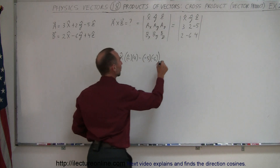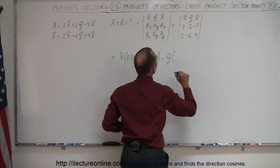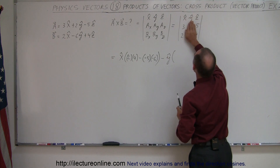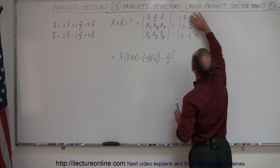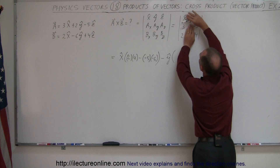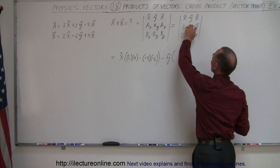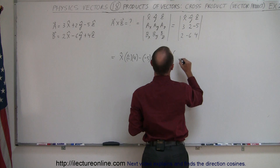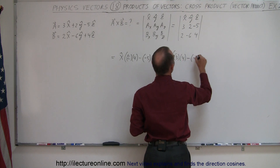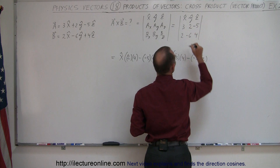Then we subtract the unit vector in the Y direction times its sub-matrix: we block out all elements in the row and the column that Y belongs to, leaving us with two pairs of numbers. We multiply them and subtract, giving us three times four minus negative five times two.